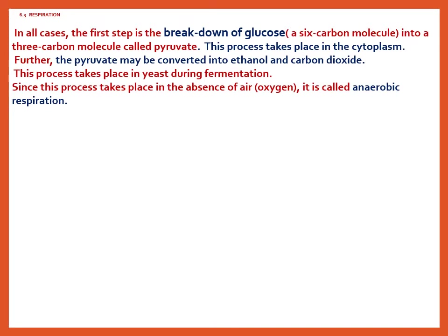In all cases, whether oxygen is used or not, the first step is the breakdown of glucose into a three-carbon molecule called pyruvate. Glucose is a six-carbon molecule — that is why its formula is C6H12O6. This first step of respiration breaks the six-carbon molecule into three-carbon molecules, called pyruvate. This process takes place in the cytoplasm.